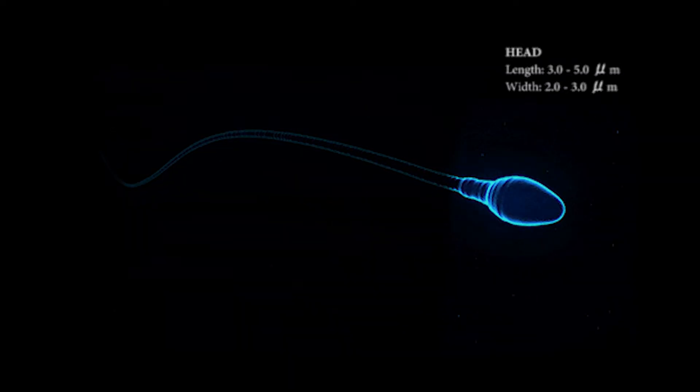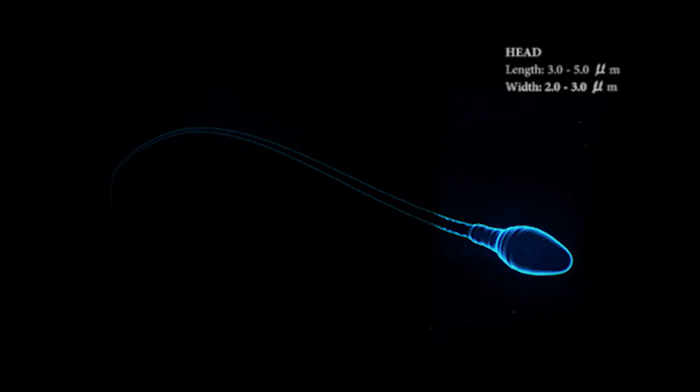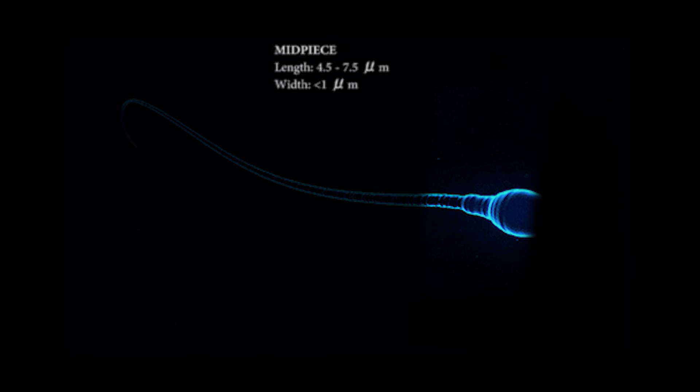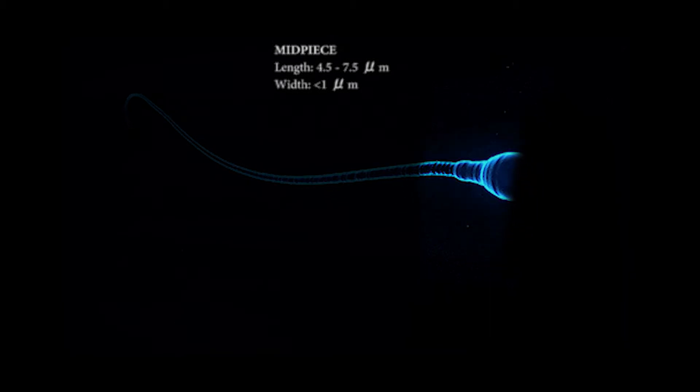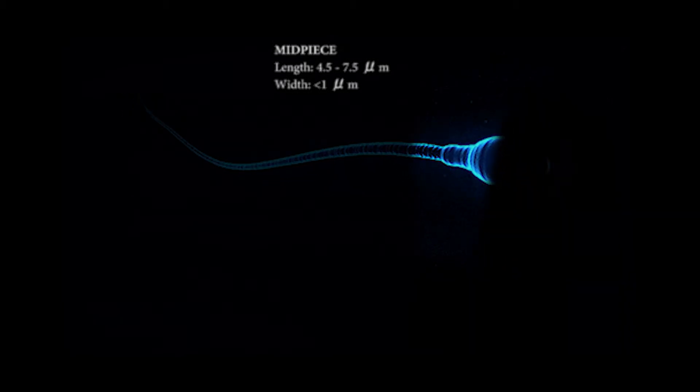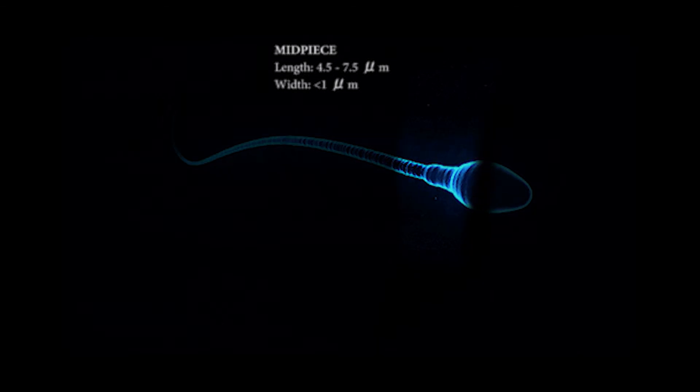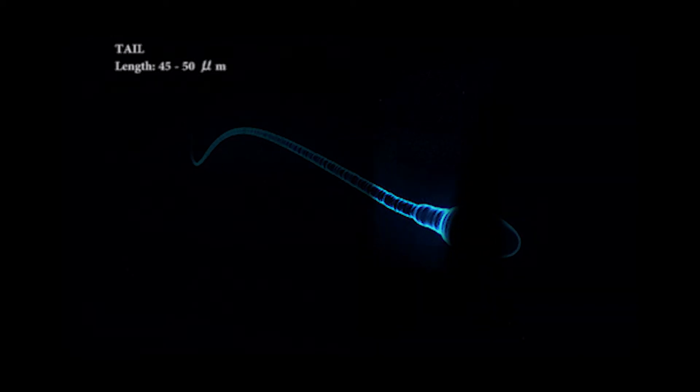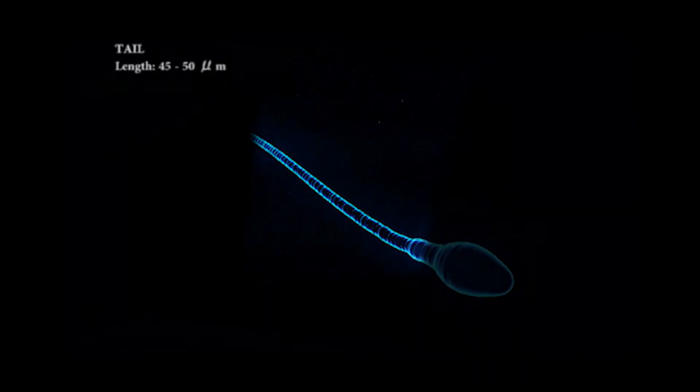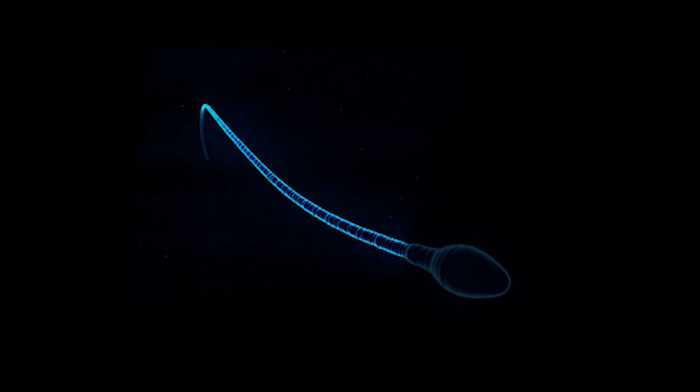The sperm head measures about 3 to 5 microns in length and has a diameter of about 2 to 3 microns. The midpiece has a length of 4.5 to 7.5 microns and a diameter of about 1 micron. The tail occupies the majority of the sperm's length, which is about 45 to 50 microns.